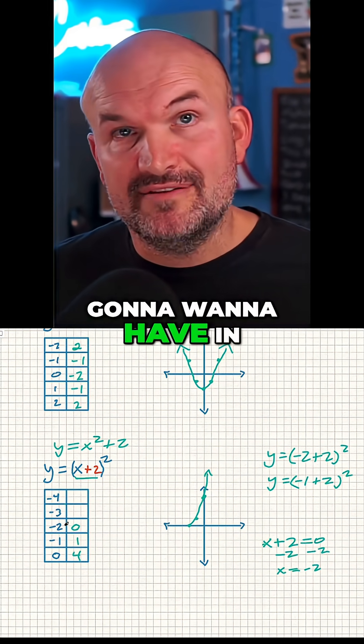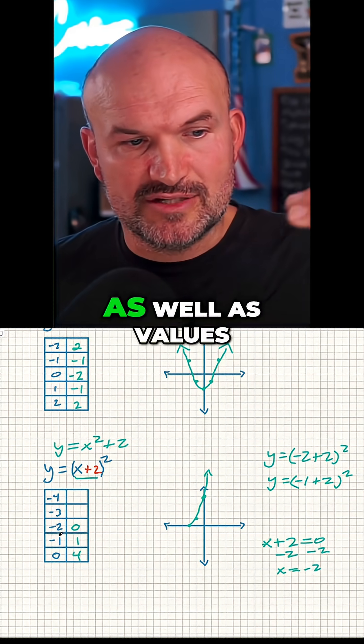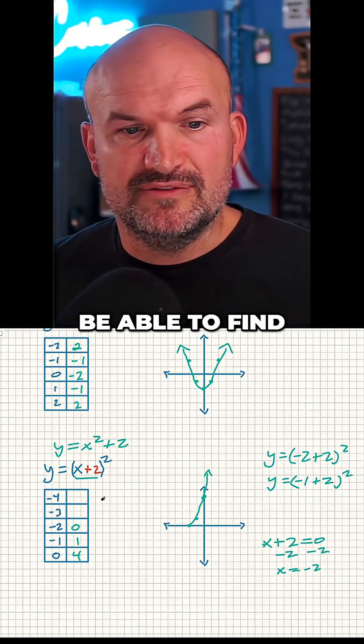That is going to be the point I want in the middle of my table. Then I'm going to pick points to the left as well as values to the right to find my different points.